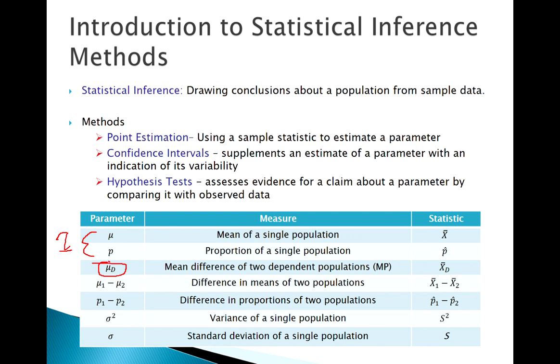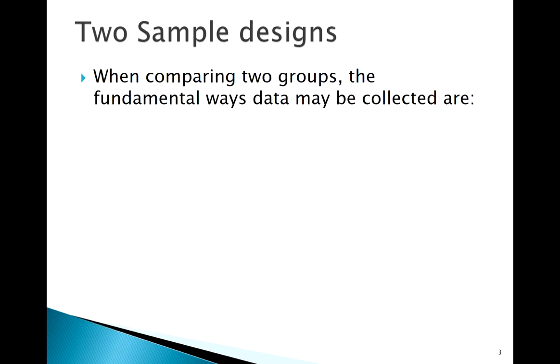Now we're moving down our list to the mean of two what we would call dependent populations. This MP here, that stands for matched pairs.